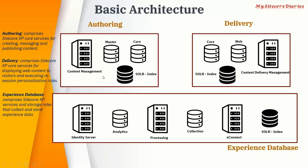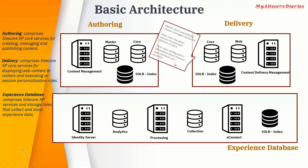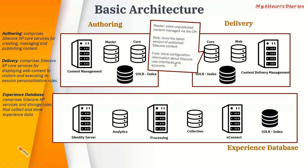Now let's see individual elements. First is content management. It is basically a server where the internal Sitecore client is hosted. Internal users create, manage, and preview the content on this server. Then we have different databases. First is the master database — it stores the unpublished content, that is in-progress data. Whatever is in progress, that data is stored in the master database, which is connected to the content management server.